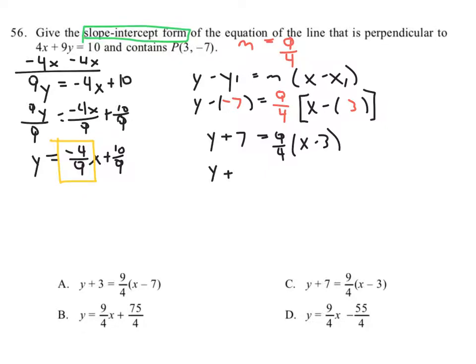We're going to distribute that 9 fourths through. We're going to say y plus 7 equals 9 fourths times x is 9 fourths x, and 9 fourths times negative 3 is negative 27 fourths.